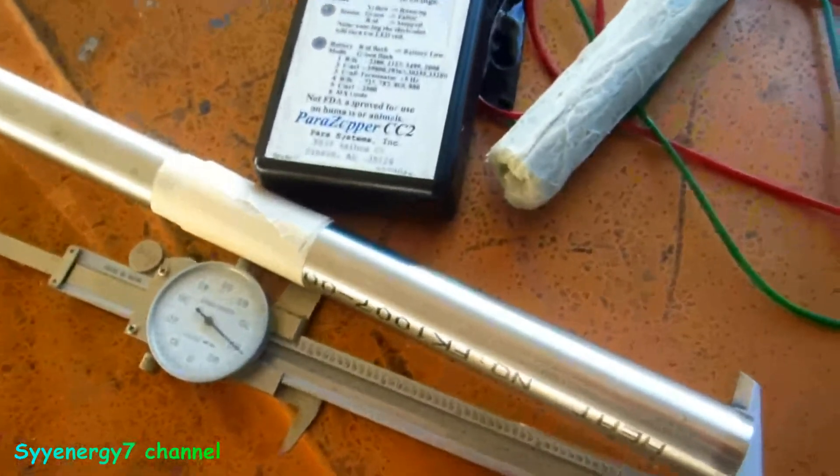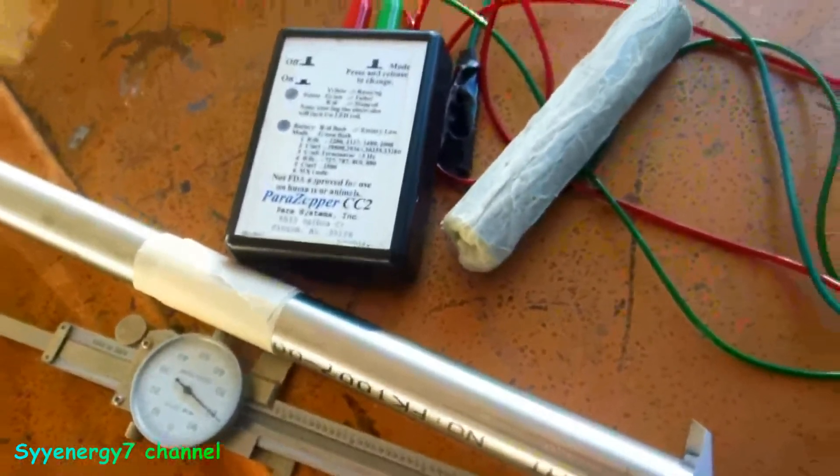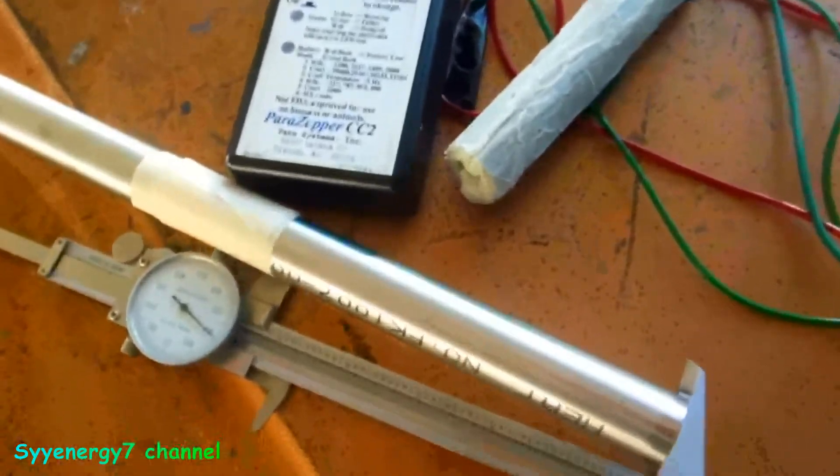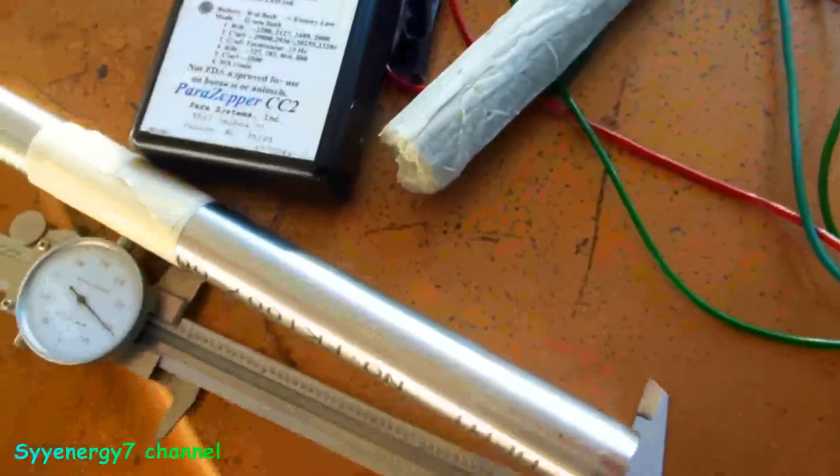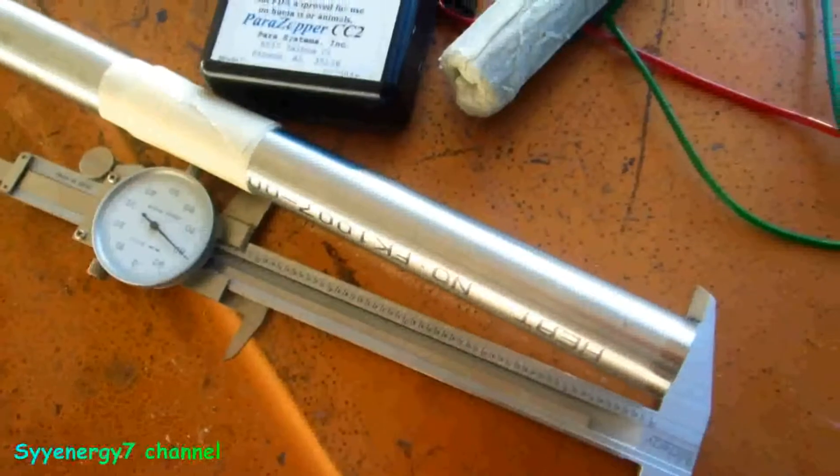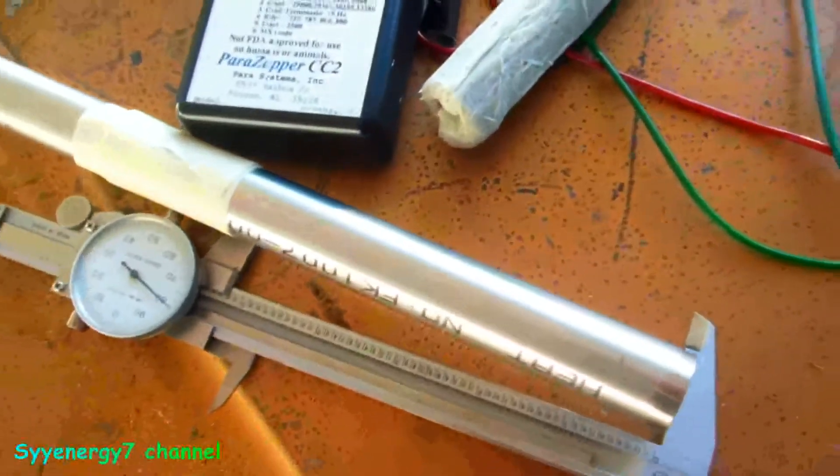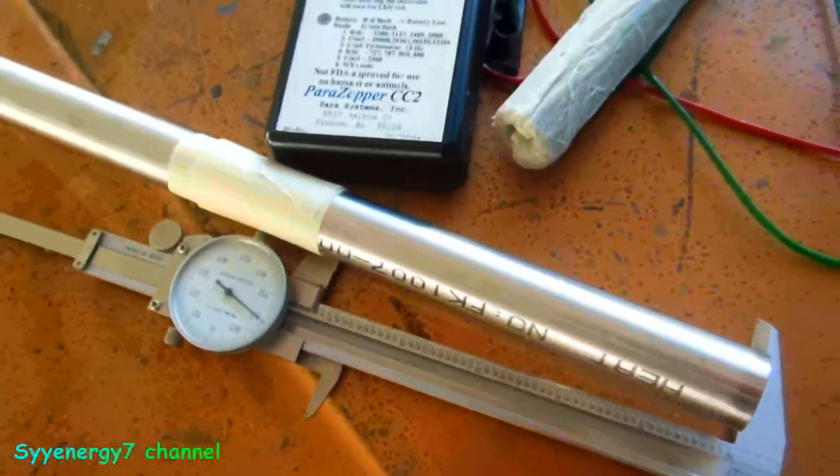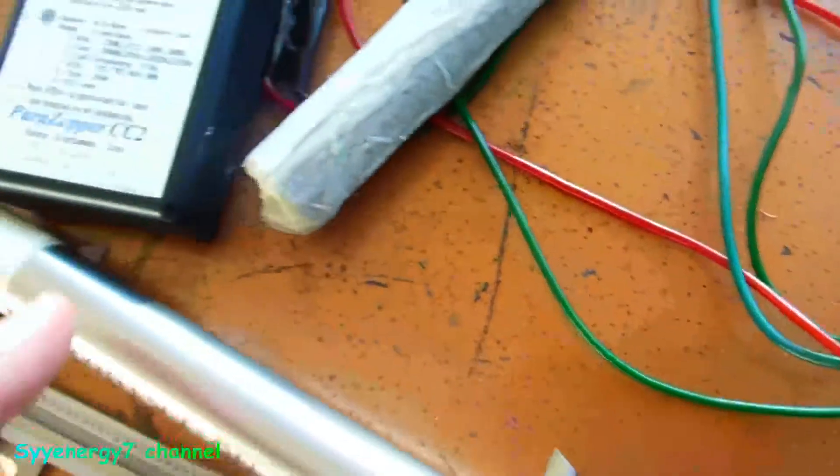Well, I decided to make some different handhelds for my Parazapper CC2. I'm going to make them for both of them, so I just unplugged them. I like the device and I think the copper is probably the most conductive in some ways, but I'm tired of cleaning the copper, so I'm going to go with 316 stainless steel.